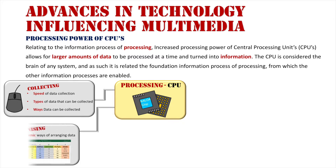Next is organization — dynamic ways of arranging data. Essentially, this is so data can be set up in a certain way for deeper processing. We've talked about in IPT before data warehousing systems that can be set up dynamically for the next information process of analyzing, in which we use data mining tools in order to go through that data.